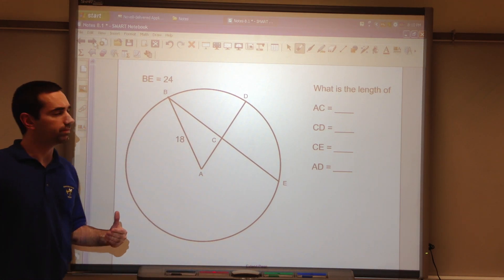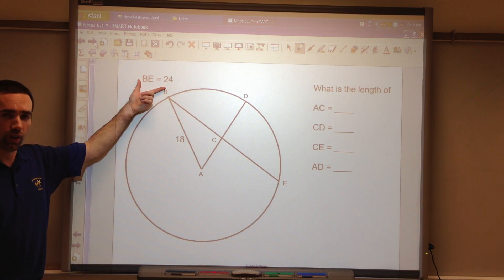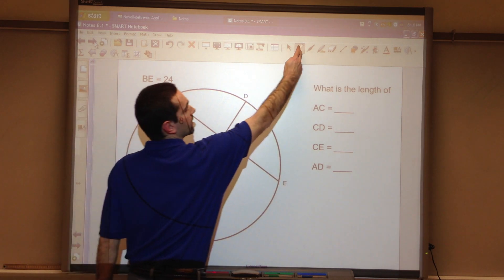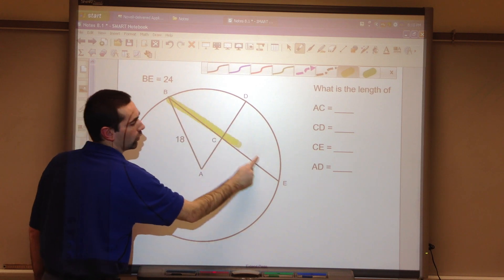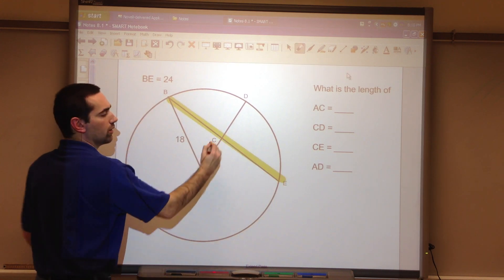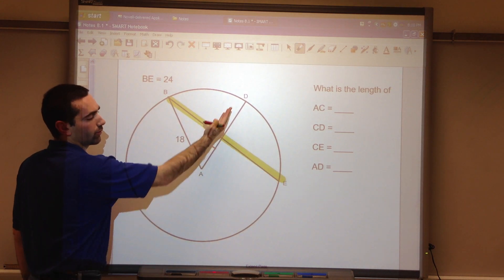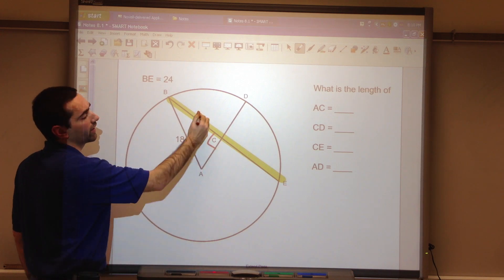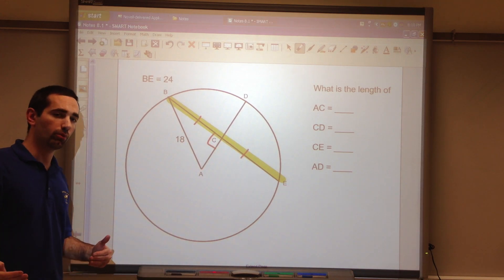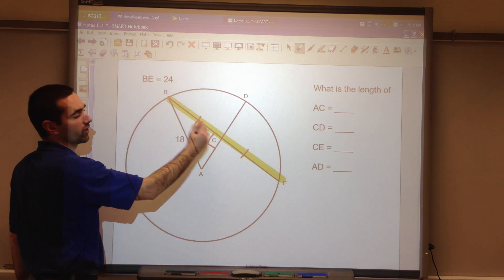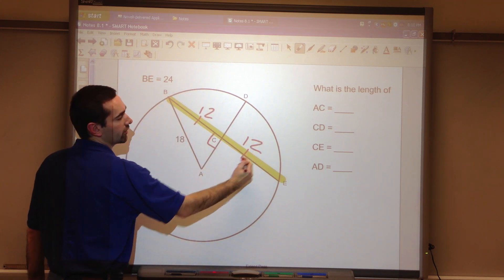So let's look at this problem. BE is 24. BE is this full length. When the radius is perpendicular to the chord, it bisects them, so it cuts into two equal measurements. 24 divided by 2 is 12 and 12.